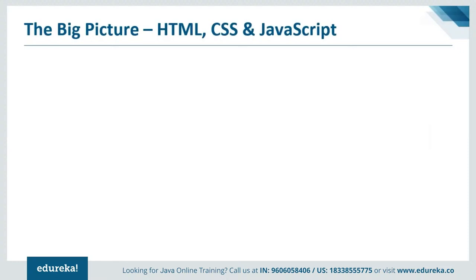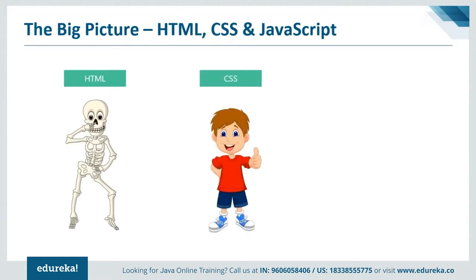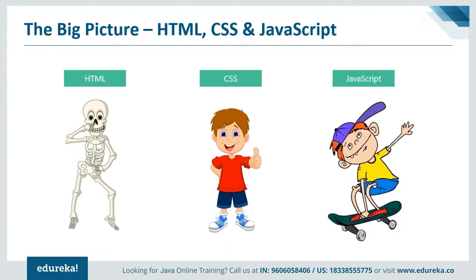Anybody who's heard of JavaScript knows it has something to do with HTML and CSS. Think of HTML — which stands for HyperText Markup Language — as a skeleton of the web, used for displaying content. CSS is like clothes — we use CSS, which stands for Cascading Style Sheets, to make the web look better and more stylish. Then there is JavaScript, which puts life into a web page — just like kids moving around on a skateboard, JavaScript makes the web interactive.